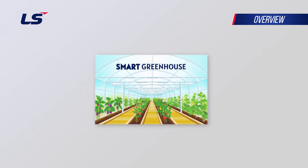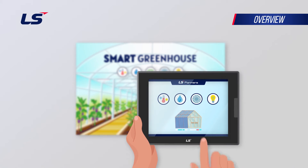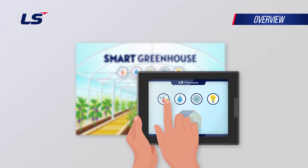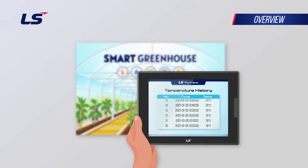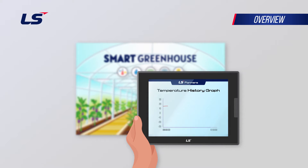For example, there are elements that need to be checked periodically, such as temperature and humidity, on farms that grow vegetables. You can set logging to periodically view the history of the values of the target, such as temperature and humidity, and visually check the trend of changes through logging trend graphs.